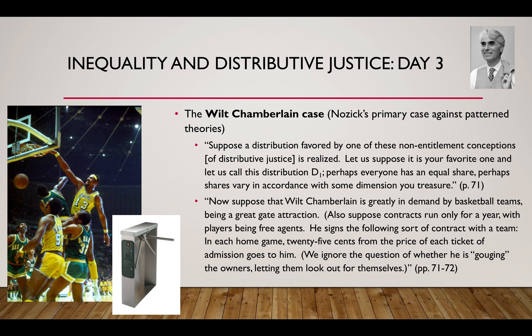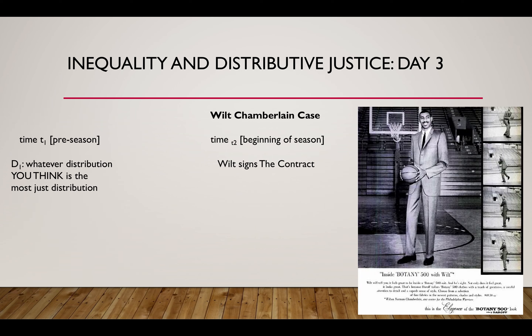Now suppose that Wilt Chamberlain is greatly in demand by basketball teams, being a great gate attraction. Suppose contracts run only for a year, with players being free agents. He signs the following sort of contract with a team: in each home game, 25 cents from the price of each ticket of admission goes to him. So at time T1 preseason, we had distribution D1 matching your favorite criterion. Now at time T2, at the beginning of the season, Wilt signs the contract.